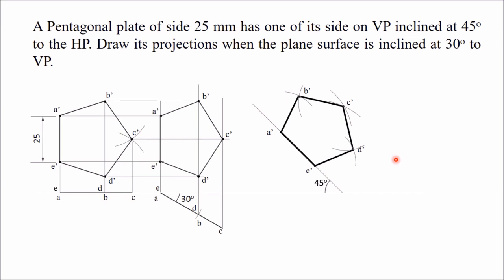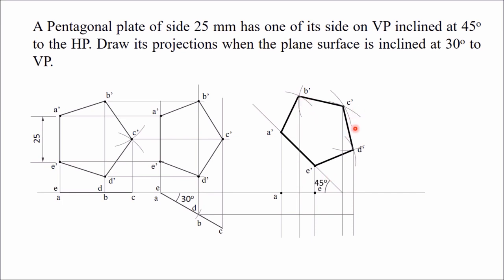Draw vertical projectors from all the final front view points. The vertical projector from A-dash and horizontal projector from A give intersection point A in the top view. Similarly, E-dash vertical projector and E horizontal projector intersect to give E. Draw horizontal projectors from B and D — B-dash gives top view point B, and D-dash gives top view point D. Draw the vertical projector from C-dash and the horizontal projector from C; they intersect to give top view point C.